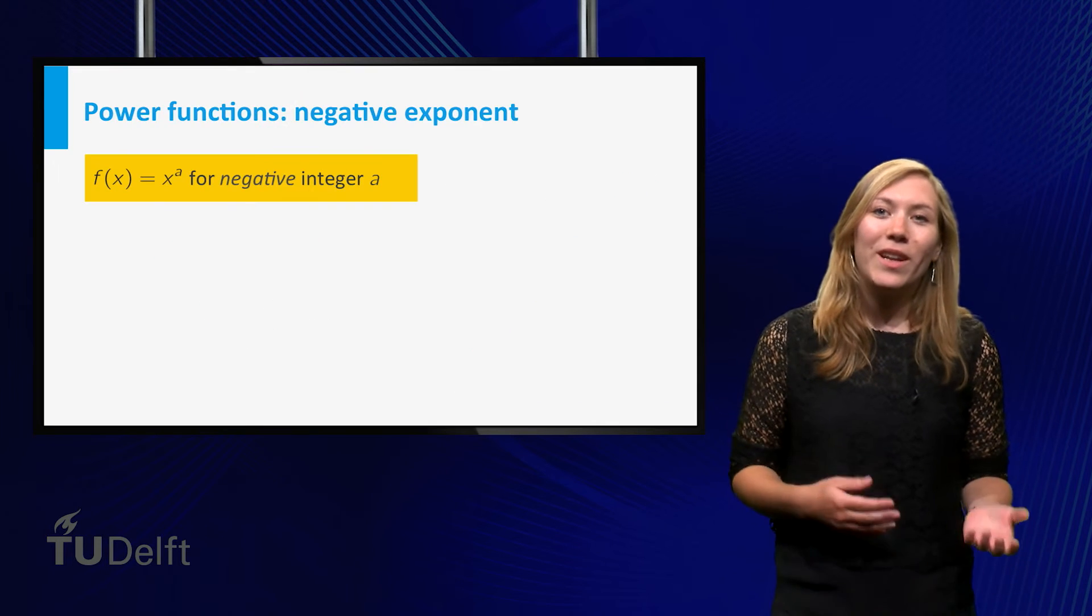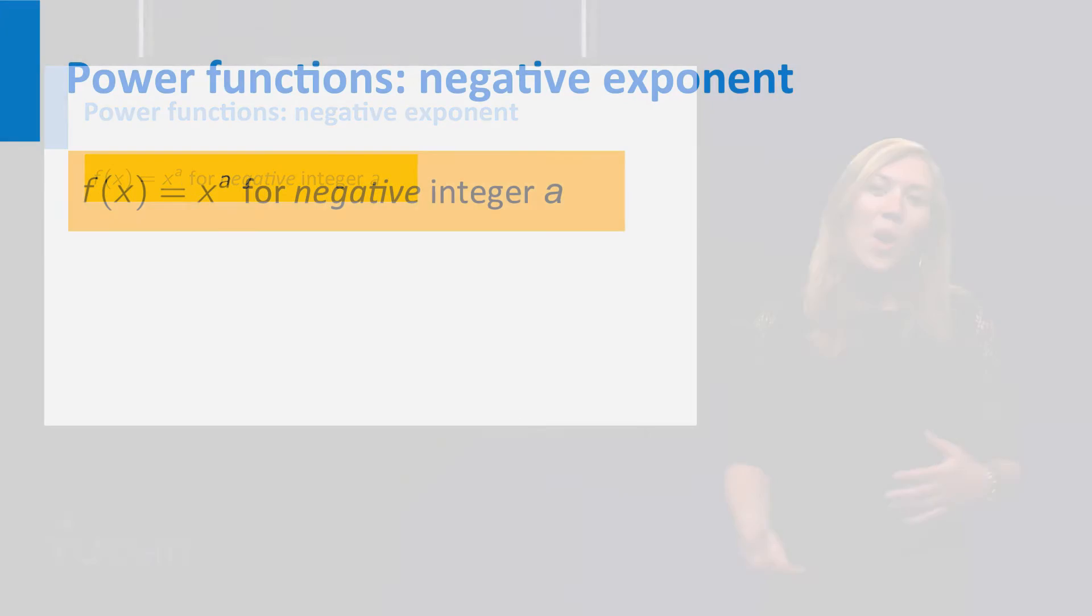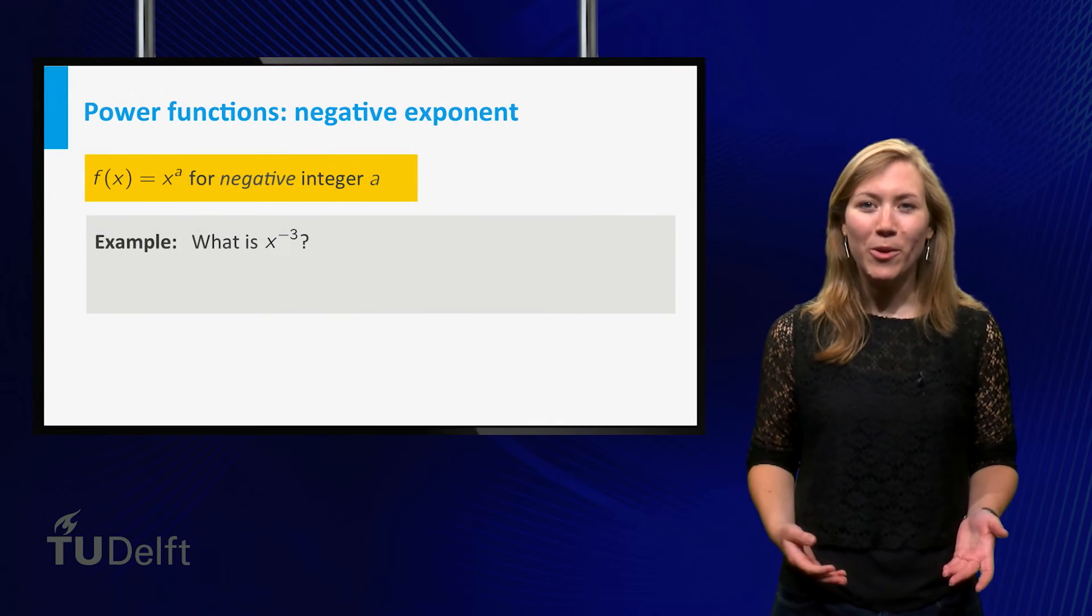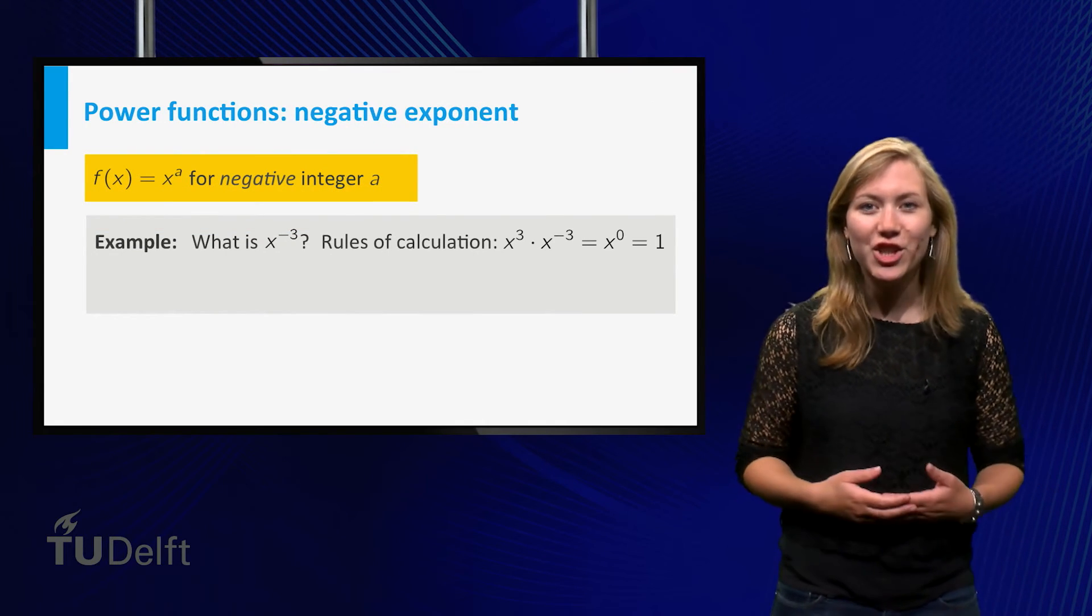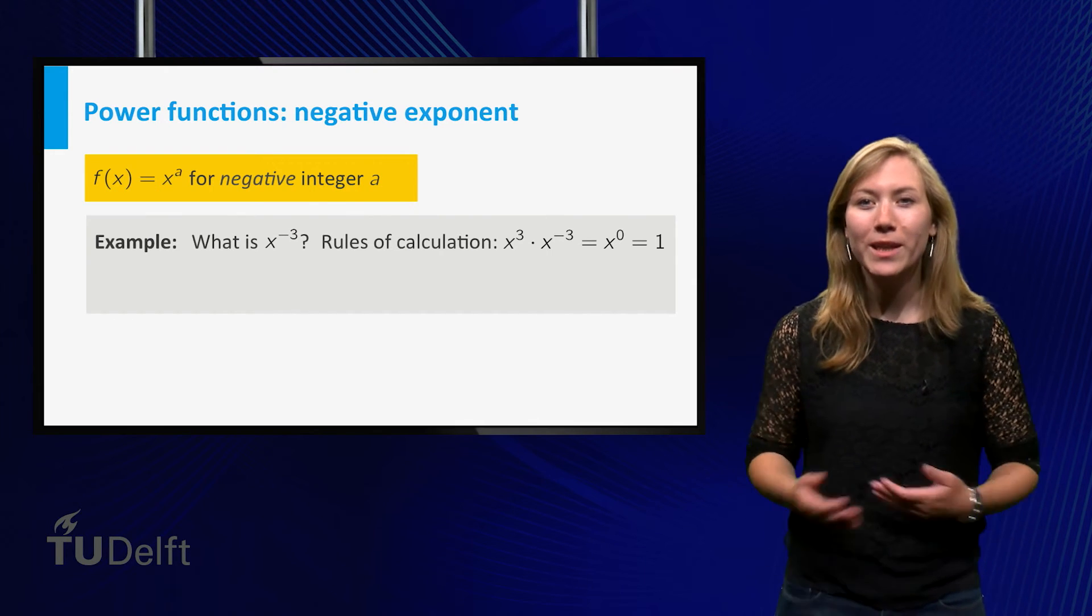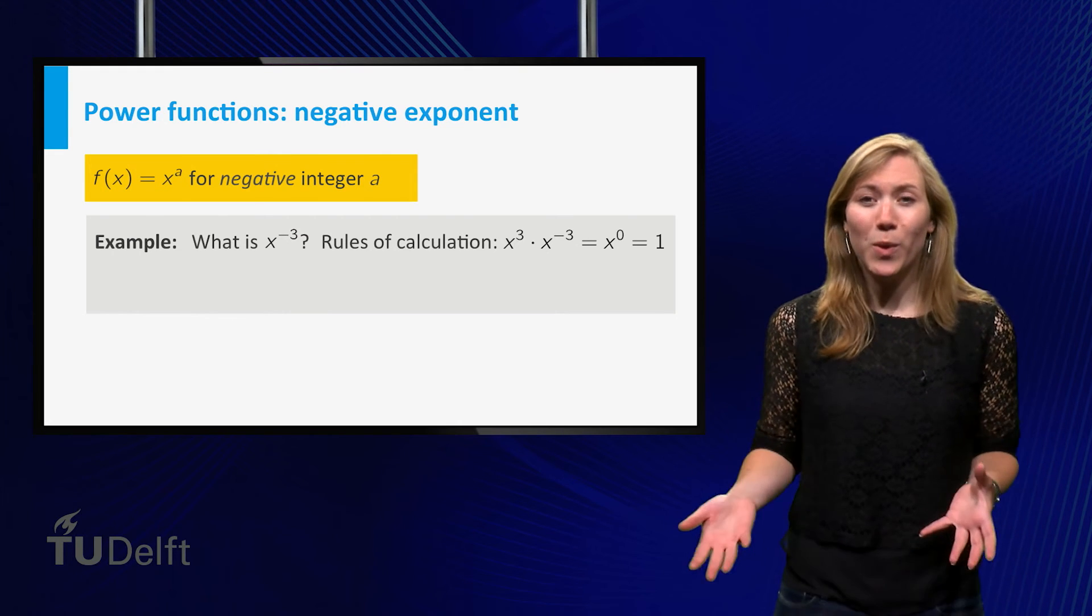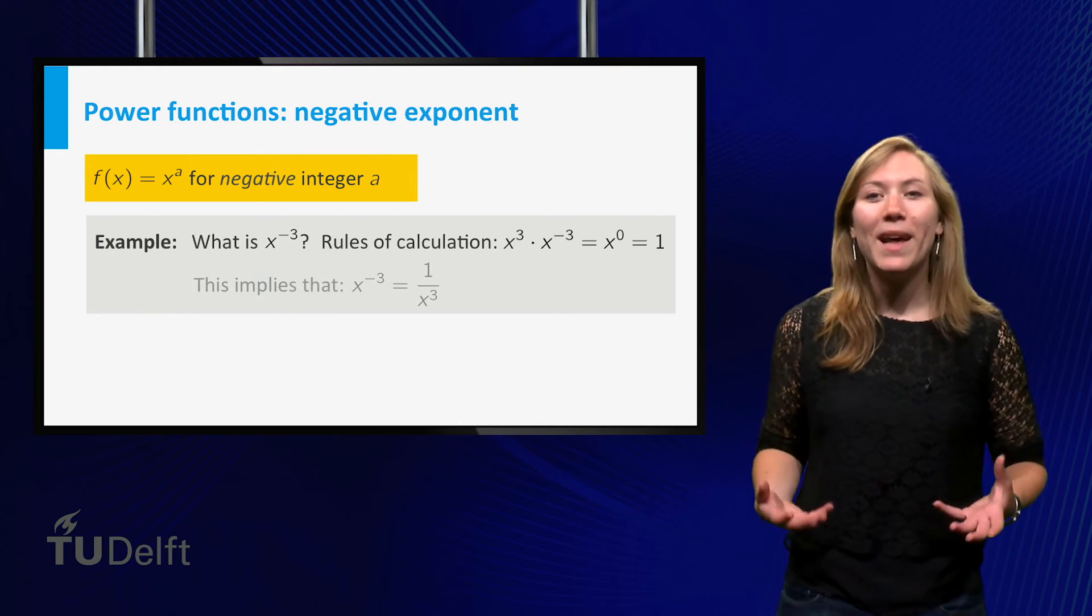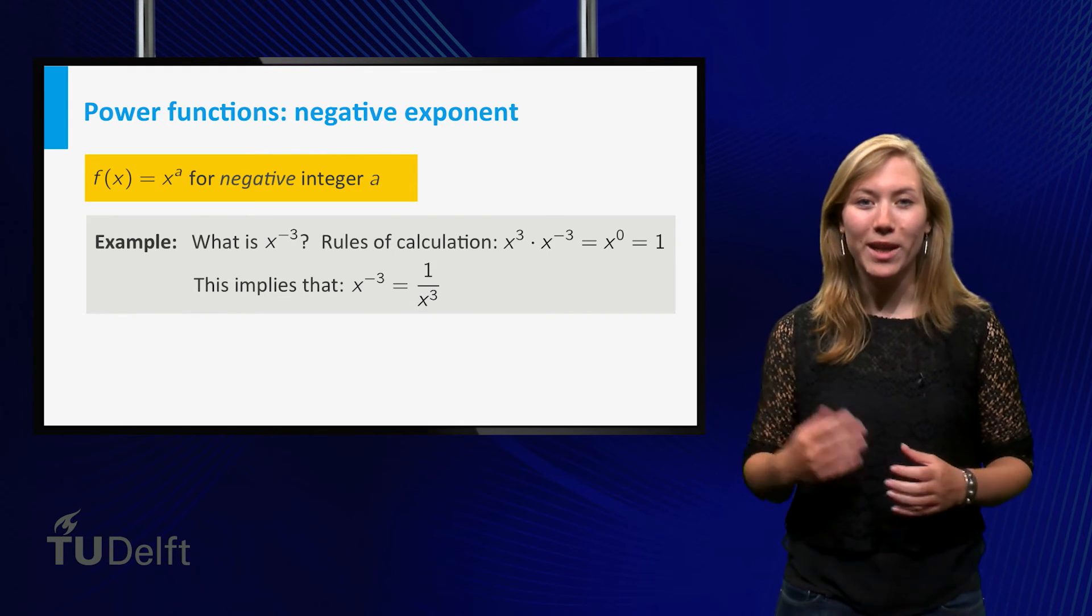Now let's look at x to the power a with a a negative integer. We can use the rules of calculation to define these. For example, what should x to the power minus 3 be? Well, according to the rules of calculation, x to the power 3 times x to the power minus 3 should be equal to x to the power 0, which equals 1. This implies that x to the power minus 3 should be 1 over x to the power 3.